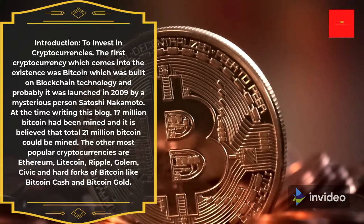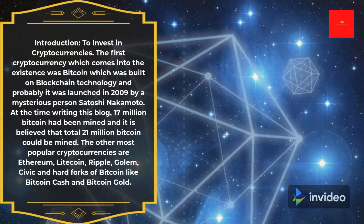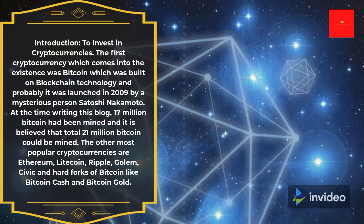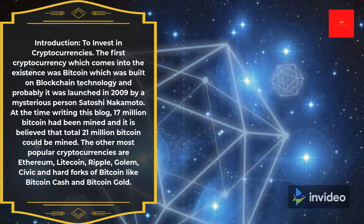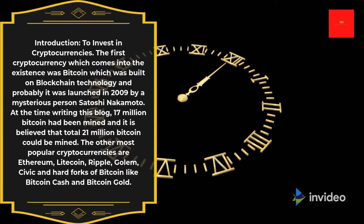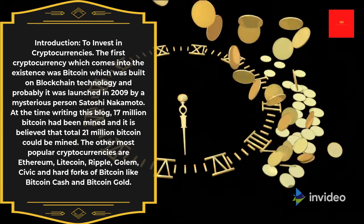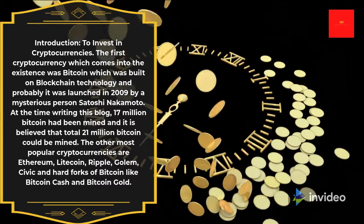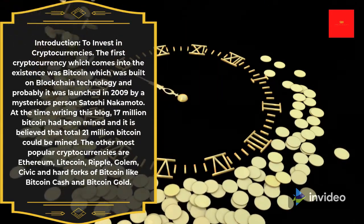The first cryptocurrency to come into existence was Bitcoin, which was built on blockchain technology and was launched in 2009 by a mysterious person, Satoshi Nakamoto. At the time of writing this blog, 17 million Bitcoin had been mined, and it is believed that a total of 21 million Bitcoin could be mined.